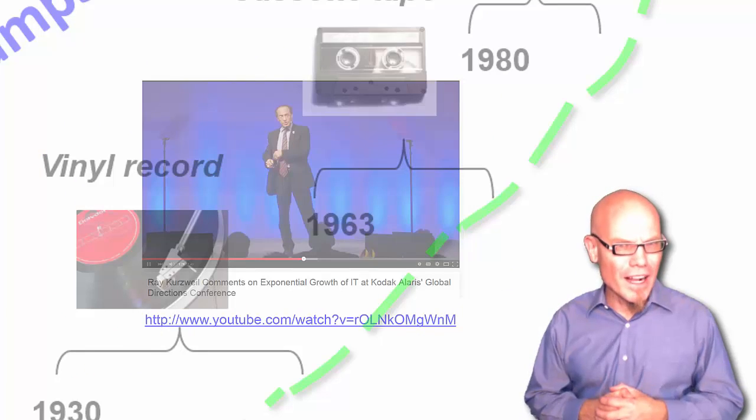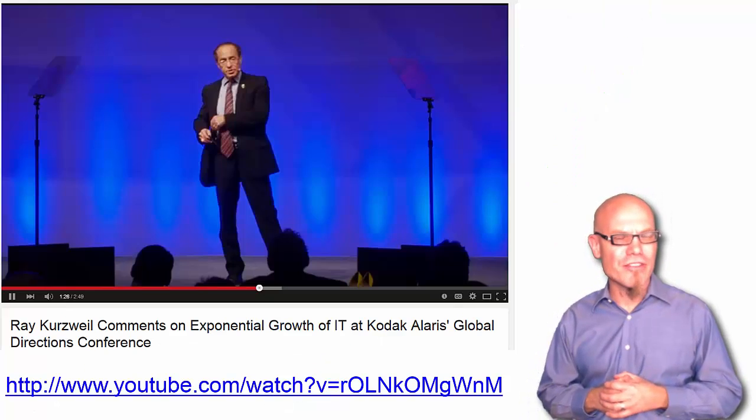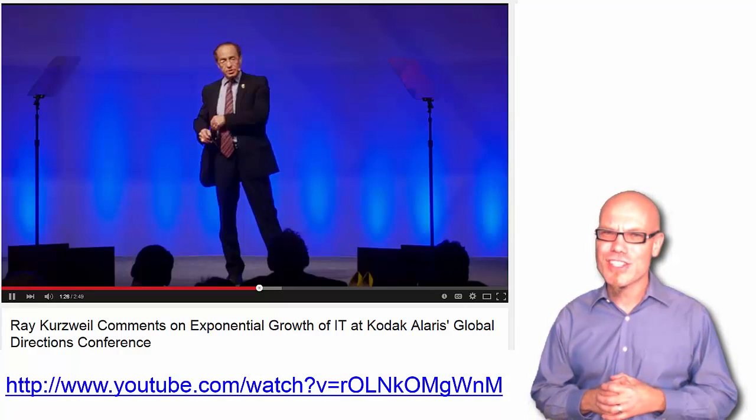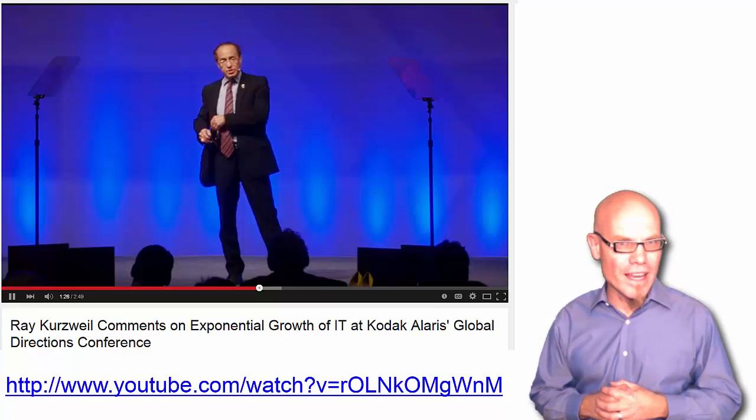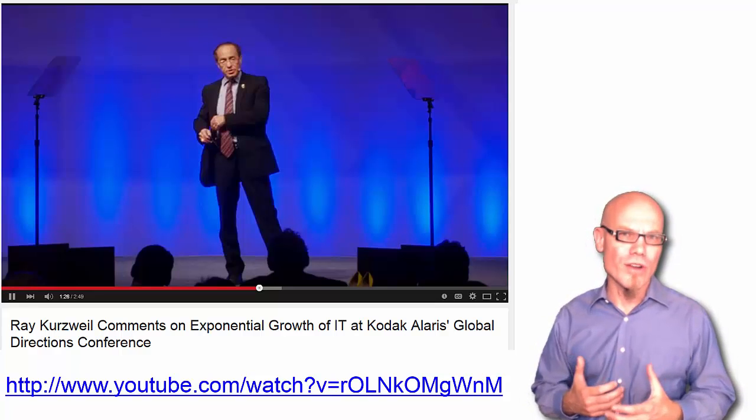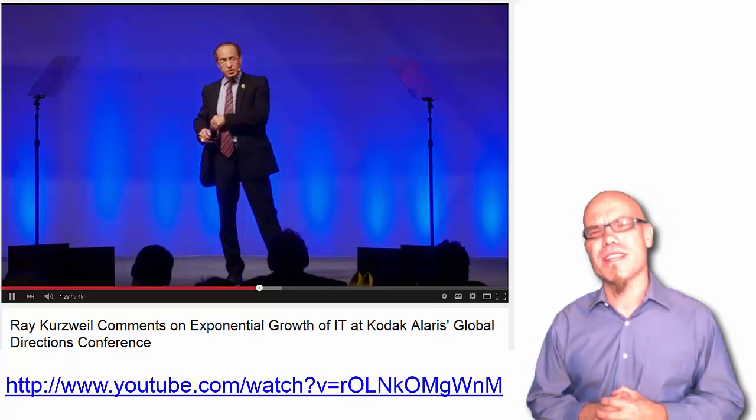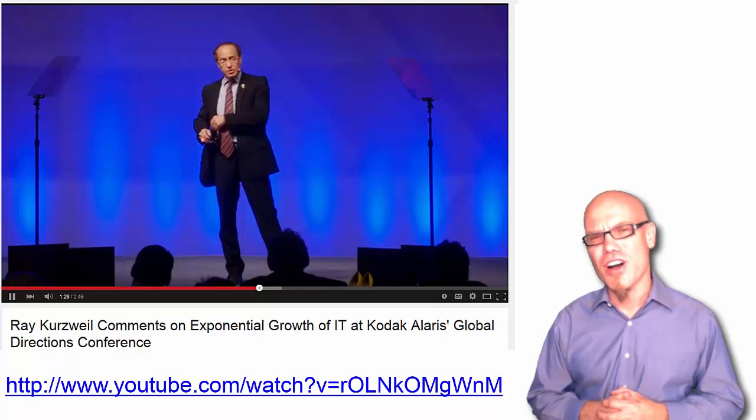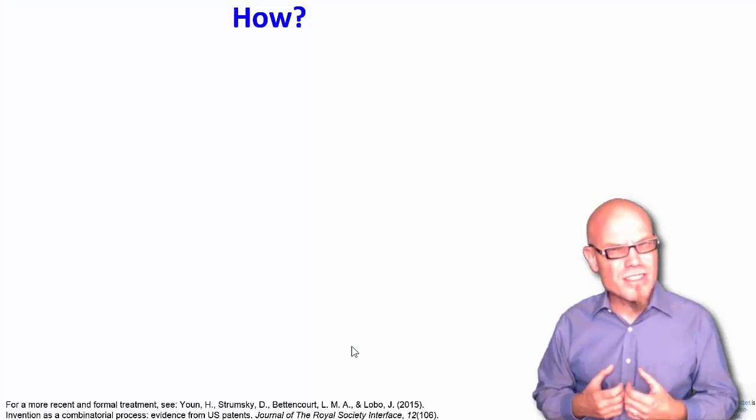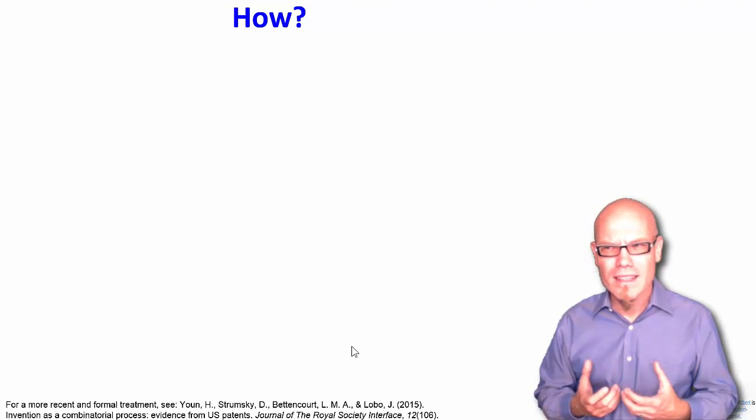Somebody who has been a very well-known and long-term advocate for the accelerating and exponentially increasing nature of technological change is the inventor and visionary and author Ray Kurzweil, also director of engineering at Google. And here in his own words what he has to say about the accelerating nature of technological change. So where does this accelerating and exponential nature of technological change come from?